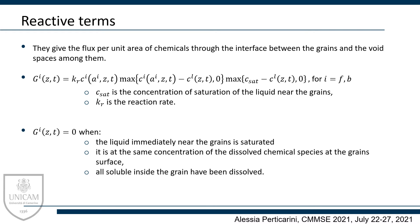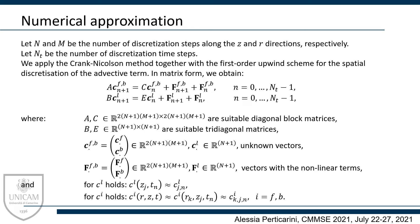In conclusion, the complete mathematical model consists of the previous two coupled problems for each chemical substance to be monitored. The numerical approximation is performed applying the Crank-Nicolson method together with the first-order upwind scheme for the spatial discretization of the advective term. The discretized system is reported in the slide in matrix form.